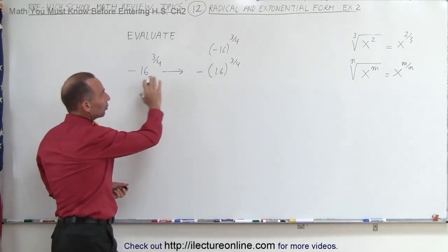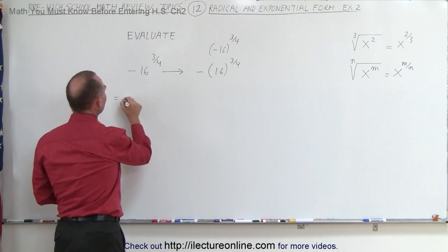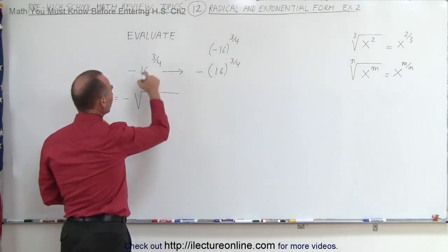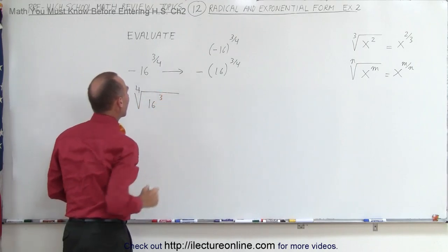It helps to be able to put this into radical form to get a feel of what we're trying to do with this here. So this can also be written as negative, radical sign. The number at the bottom is the root, so it's the fourth root of this number raised to the third power.